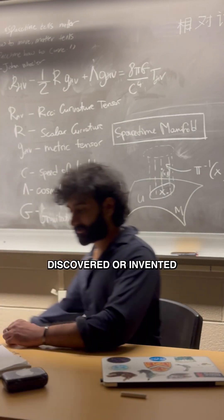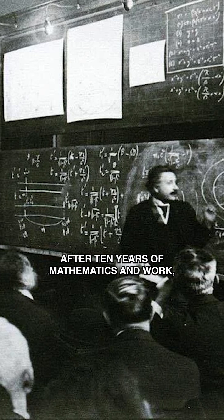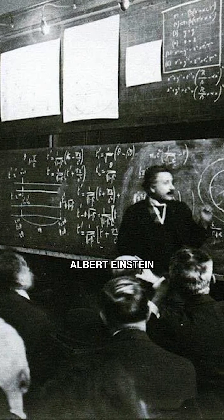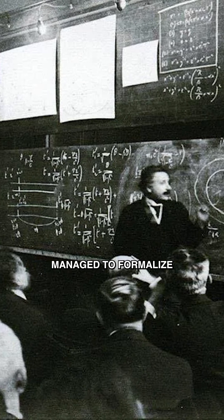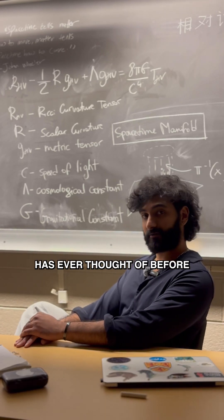Was mathematics discovered or invented? In 1916, after 10 years of mathematical work, Albert Einstein managed to formalize a completely new picture of gravity, a picture that nobody had ever thought of before.